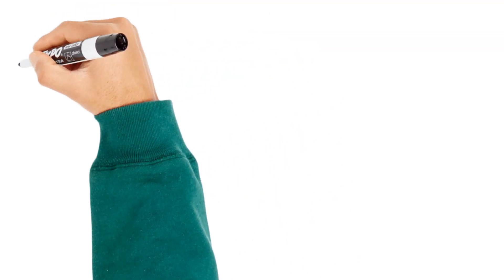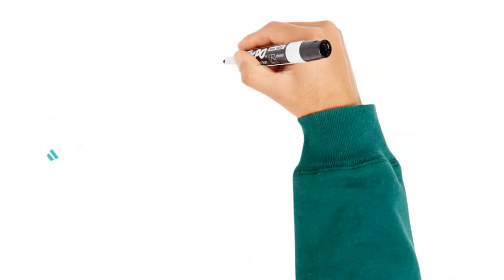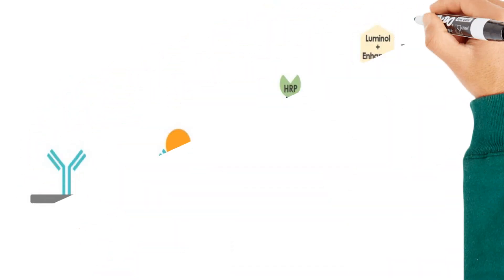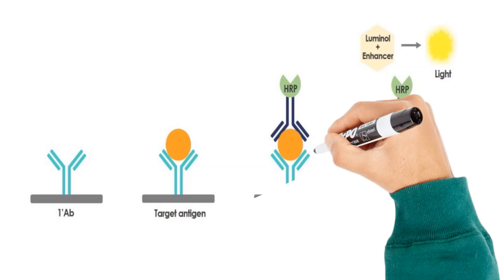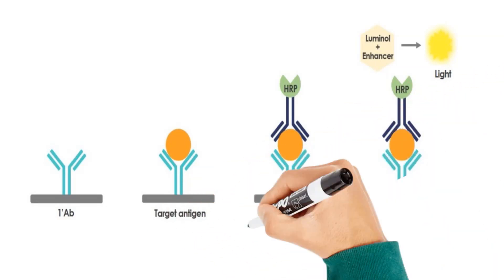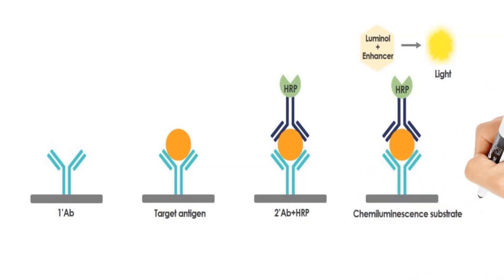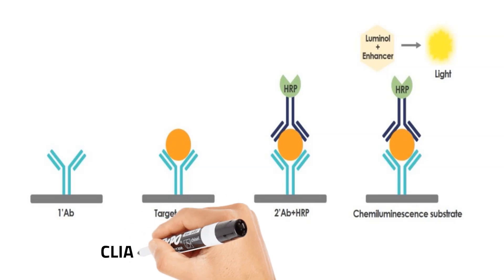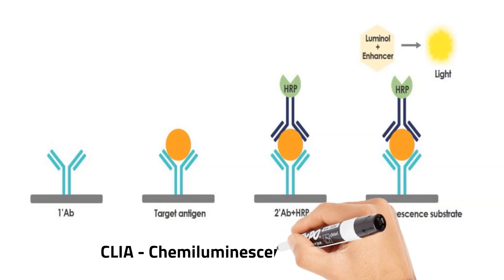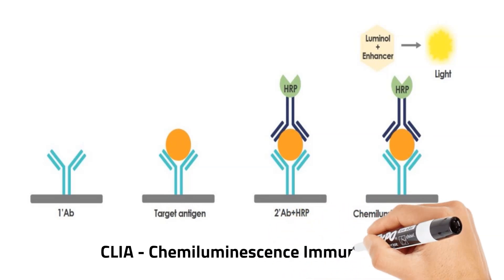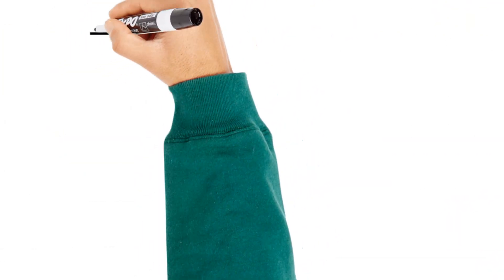Chemiluminescence immunoassay, or CLIA, is similar to ELISA and can be used in both sandwich and immunocapture formats. The sandwich method involves the use of a capture antibody immobilized on a solid surface that binds to the target molecule. A detector antibody labeled with a luminescent molecule or an enzyme also binds to the captured target molecule, forming a sandwich complex. The enzyme on the detector antibody catalyzes a chemical reaction when the substrate is added, which results in the emission of light. The emitted light is measured and is proportional to the concentration of the target analyte in the sample.